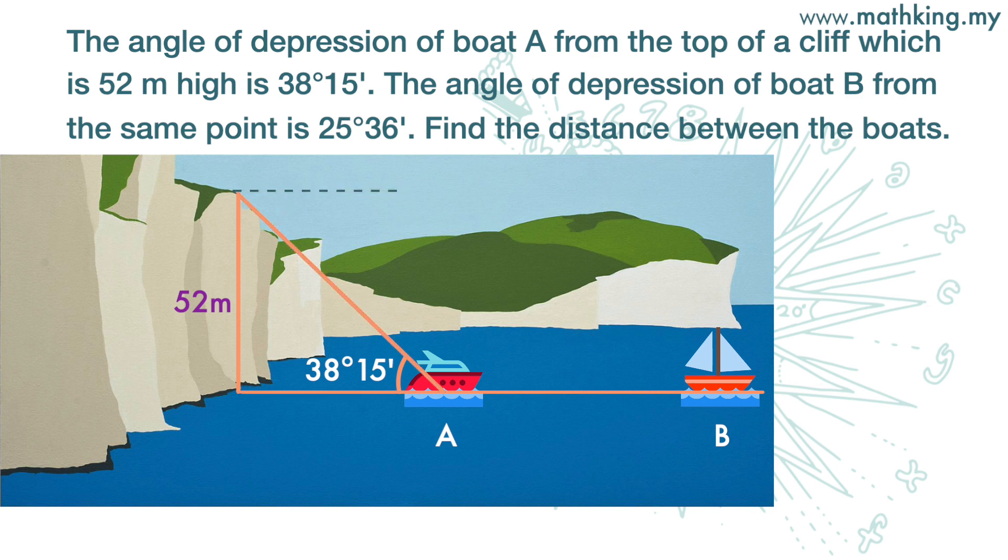The angle of depression of boat B is 25 degrees 36 minutes. This angle is also the same as this angle here, because they are alternate angles. So we get this diagram of two triangles.